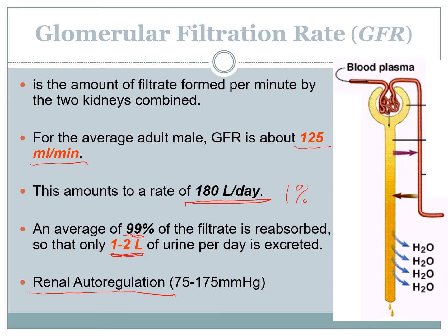If arterial pressure is anywhere between 75 and 175 mmHg, the glomerular structure can alter the amount of blood coming in — either opening up vessels to allow more blood flow in times of low blood pressure, or reducing blood flow in times of high blood pressure to prevent protein and blood from breaking through. If blood pressure is too low, hydrostatic pressure wouldn't be high enough to push fluids through. It's not perfect — you can have pre-renal failure — but it does have its own internal auto-regulatory system.